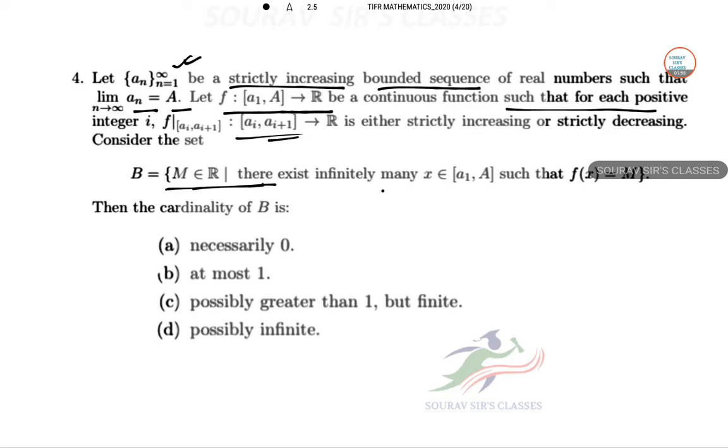So we will talk about two sets and infinitely many structure. Then the cardinality of B. So a n is a strictly increasing bounded sequence. So this is strictly increasing bounded sequence.